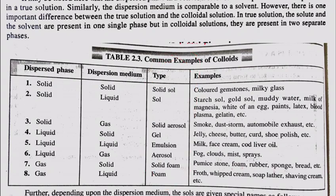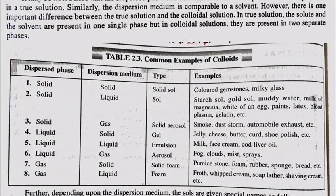For example, if asked what a sol is: a sol is the type in which the dispersed phase is solid and the dispersal medium is liquid. Examples include starch sol, gold sol, muddy water, milk of magnesia, white of egg, beans, latex, and blood.